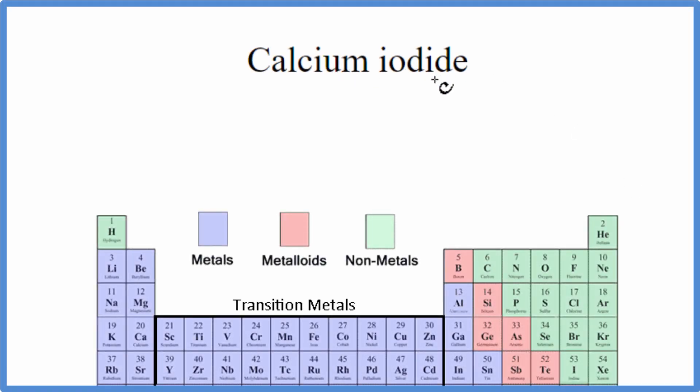To write the formula for calcium iodide, we go to the periodic table and we find calcium, that's Ca, and that's a metal, and then iodine, that's just I, and that's a nonmetal.